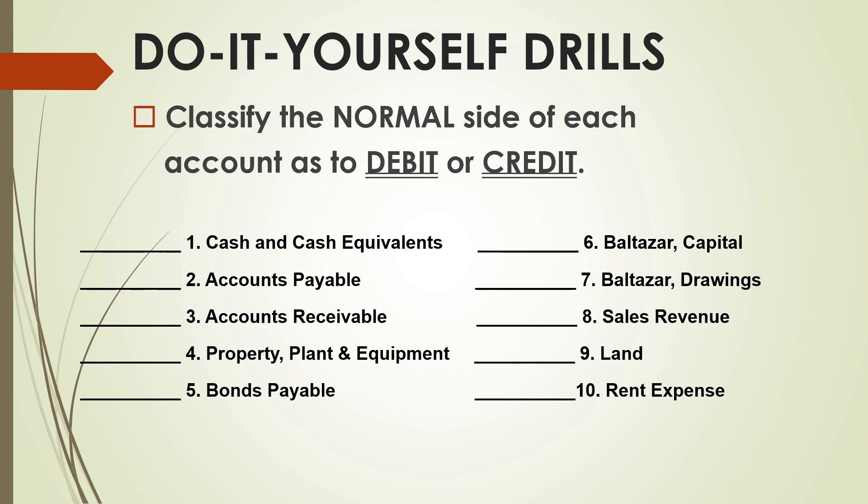Number ten: rent expense is categorized under expenses and the normal side of expense is debit, so the answer for number ten is debit. I hope you learned something from our do-it-yourself drills. Be sure to familiarize yourself with the rules of debit and credit.